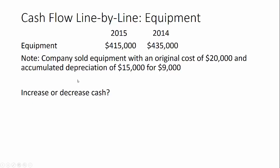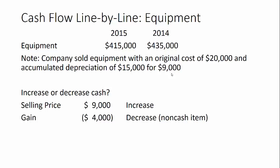What effect will the nine thousand dollars have on cash? If you sell a piece of equipment, your cash goes up, so the nine thousand creates an increase. For the gain — since we want to remove it from net income — we subtract it back out, which decreases cash by four thousand. Remember, the purpose of the operating section is to take net income and bring it to cash from operations. Non-cash items include gains, losses, depreciation, and amortization.